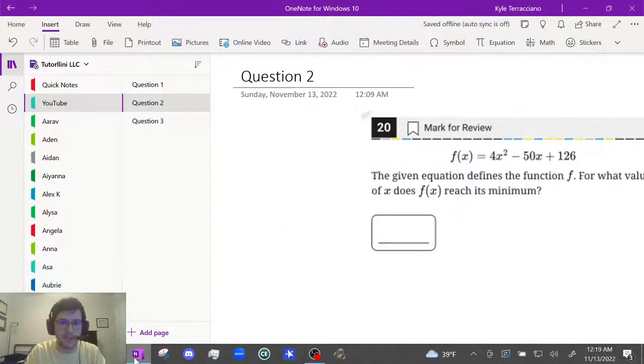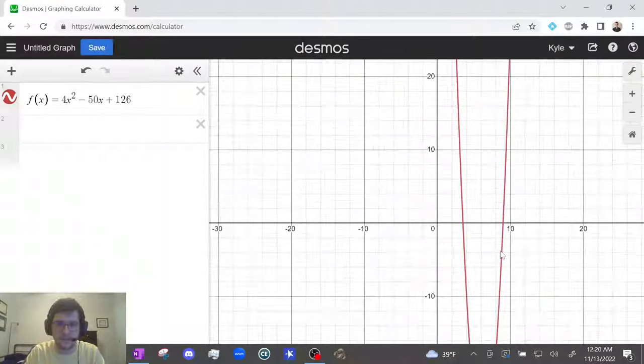So f of x equals 4x squared minus 50x plus 126. And this is really great, because as you can see, this is not a multiple choice question. So you can get a free response question just by knowing this.